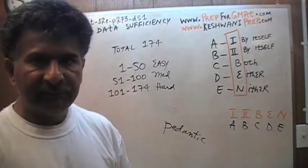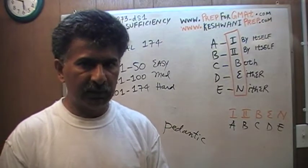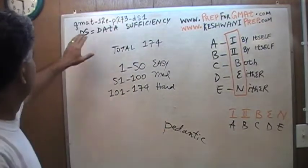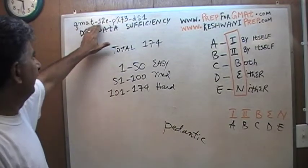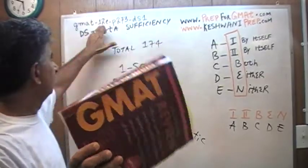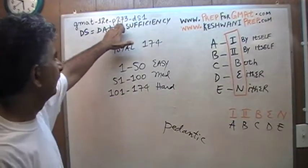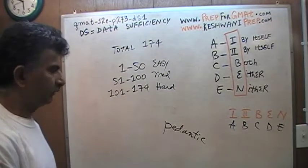As I record more problems, if you want to search for a particular problem, the tag you want to use is GMAT-12E for 12th edition, then the page number. This is page 273, data sufficiency number one.